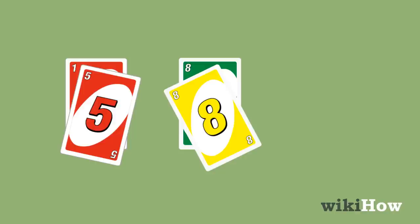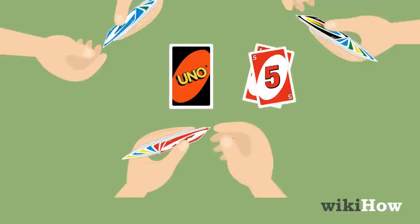The first player starts by playing a card that matches either the number, color, or type of the card on top of the discard pile.